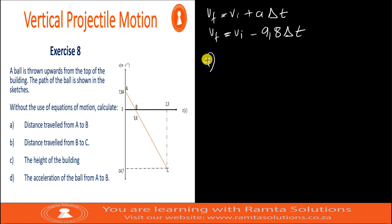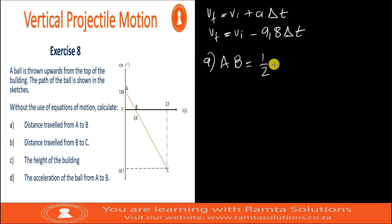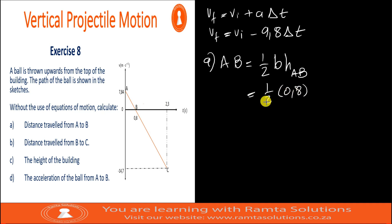Let's look at number A. It says calculate the distance travelled from A to B. Because we're not using equations of motion, distance AB is the area under the graph. The shape here is a triangle, so it's half base times height. What is our base? It looks like it's 0.8 — this is the time it takes to reach maximum height. It's 0.8.